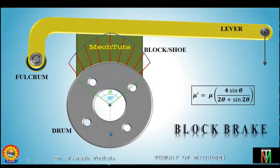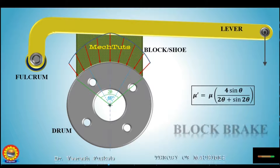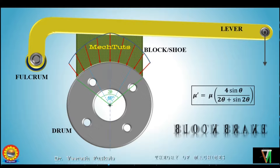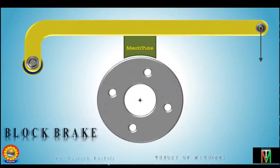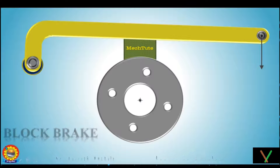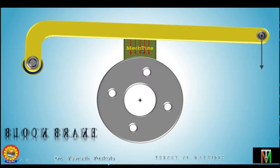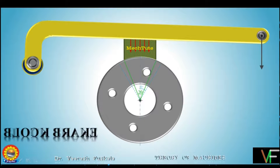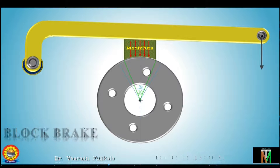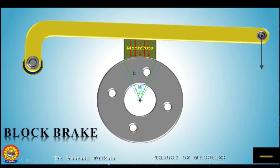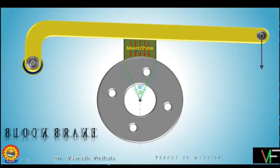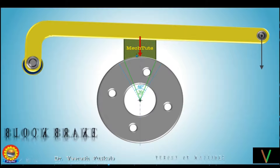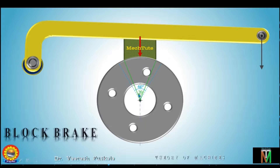Suppose we see an example of a brake shoe with a contact angle less than 60 degrees. You can see it is nearly uniform pressure acting on the drum since the angle 2-theta is less than 60 degrees. So we can replace this distributed pressure by a single force, which is assumed to act at the center of the block, with its line of action passing through the center of the drum as well.